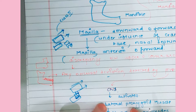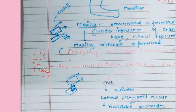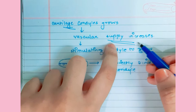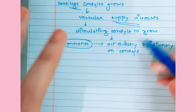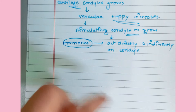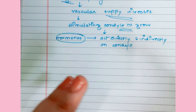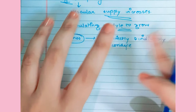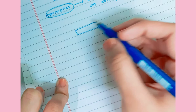The lateral pterygoid muscle contracts, stimulating the condyles. Vascularity and blood supply in that region increase, and the cartilage of the condyle grows. These stimuli cause the condyle to grow and bring the mandible forward to keep up with the maxilla. Hormones also act directly and indirectly on the condyle. This is the physiological basis for why we give myofunctional appliances in Class 2 patients.